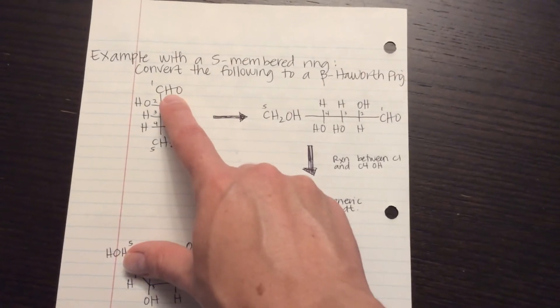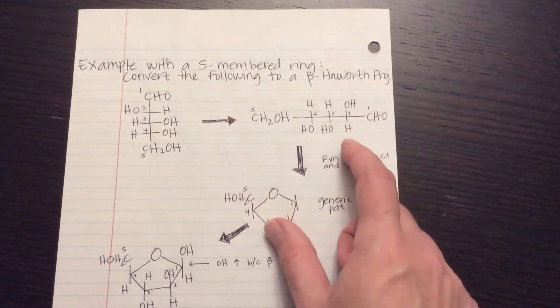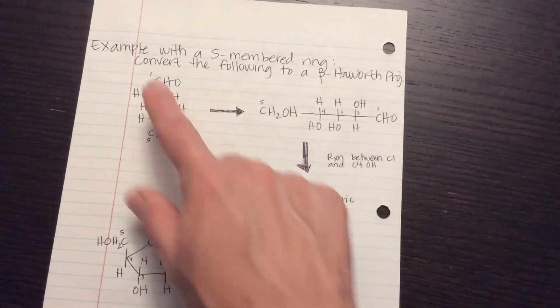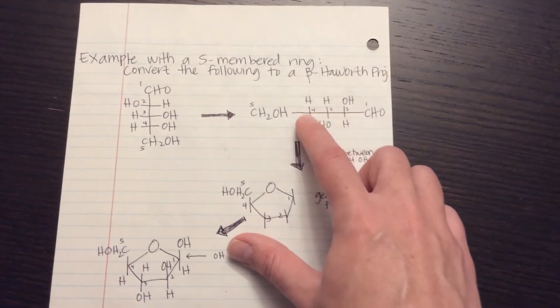Again, make sure your most oxidized carbon is at the top. Now rotate it 90 degrees, unless you can visualize it. If you can visualize what this looks like rotated, then obviously you don't need to go through this step. One, two, three, four, five.